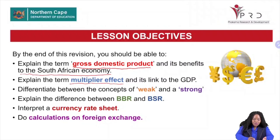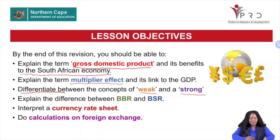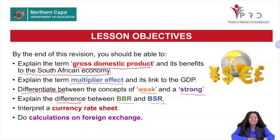You must also be able to explain the term multiplier effect. Multiplier effect was well explained in Grade 10, Grade 11, and you see it again in Grade 12. These concepts and terminology keep coming back from previous grades, so it means they are important and you need to know them. You must also be able to differentiate between the concept of a weak and a strong rand — what happens when the rand is strong, what happens when the rand is weak, and how do you see that in the exchange rates.